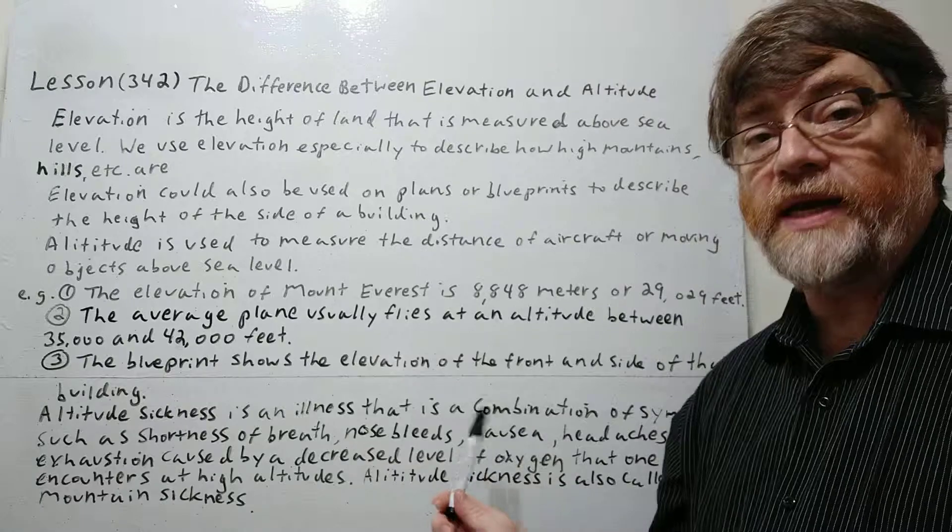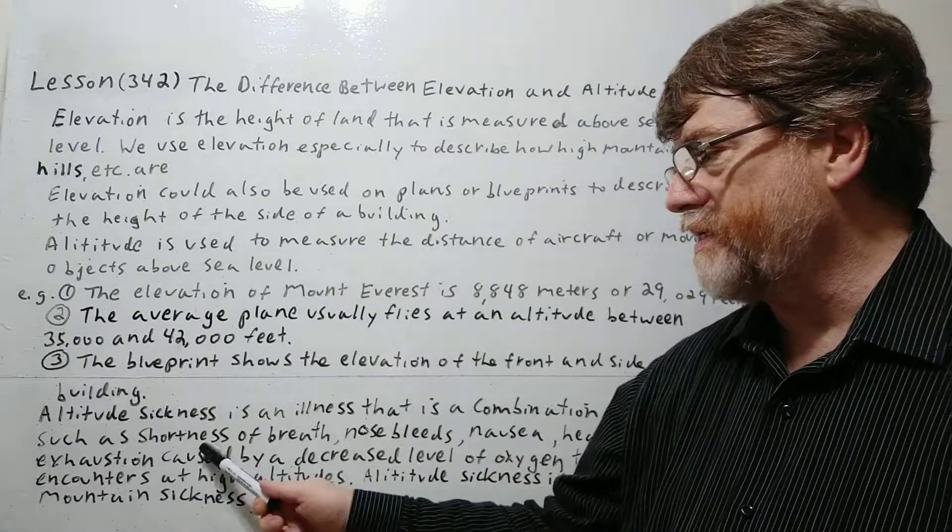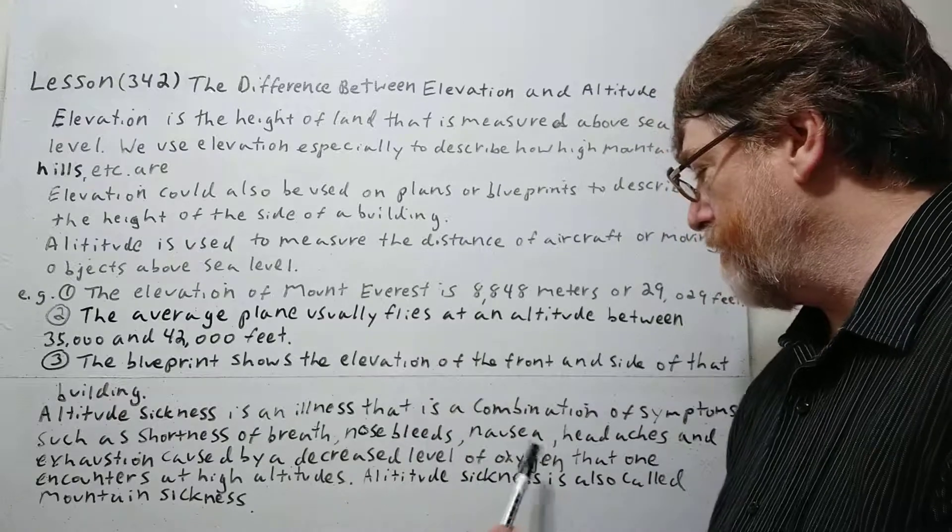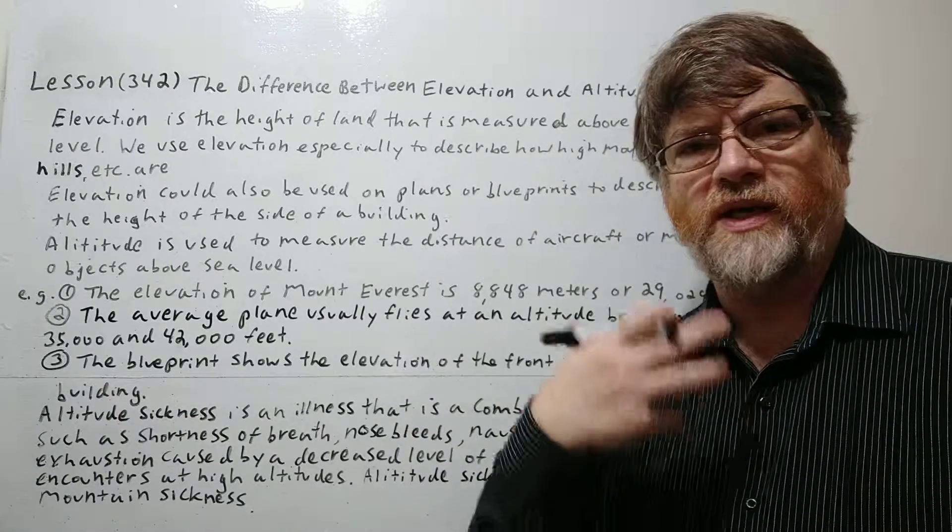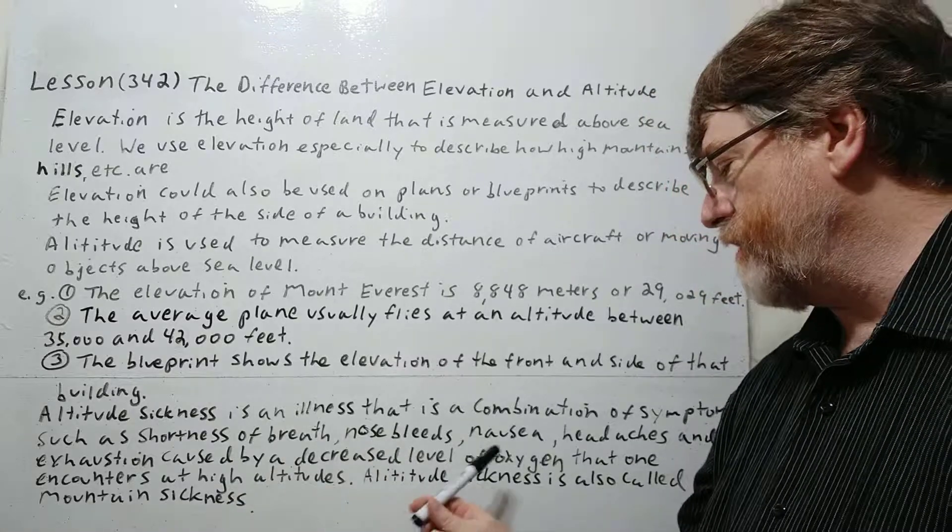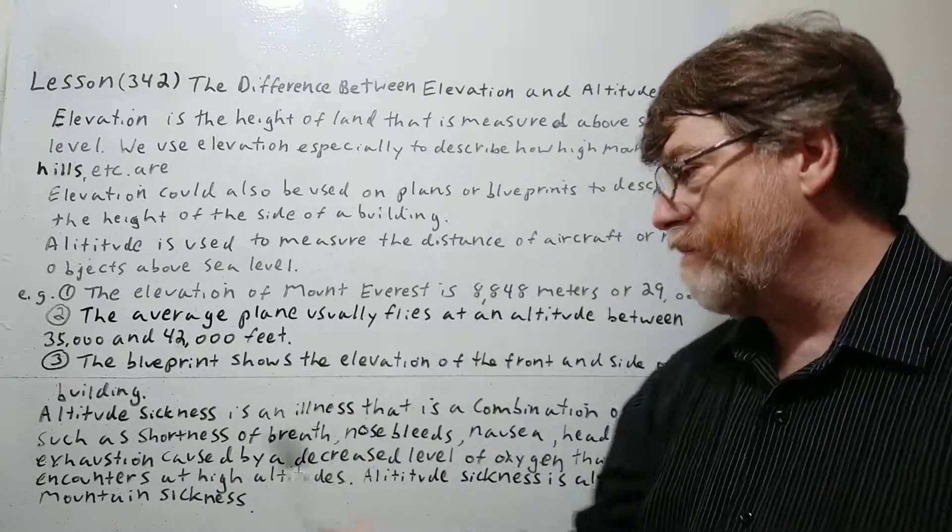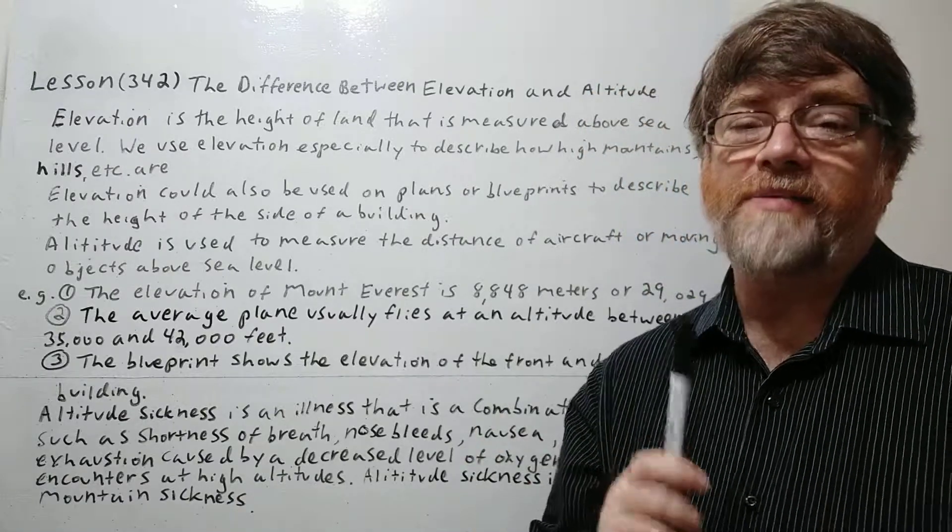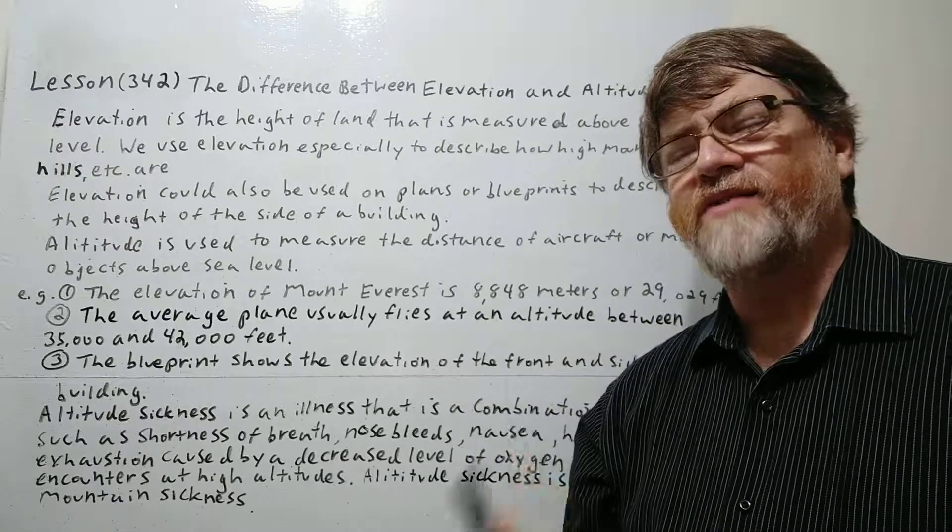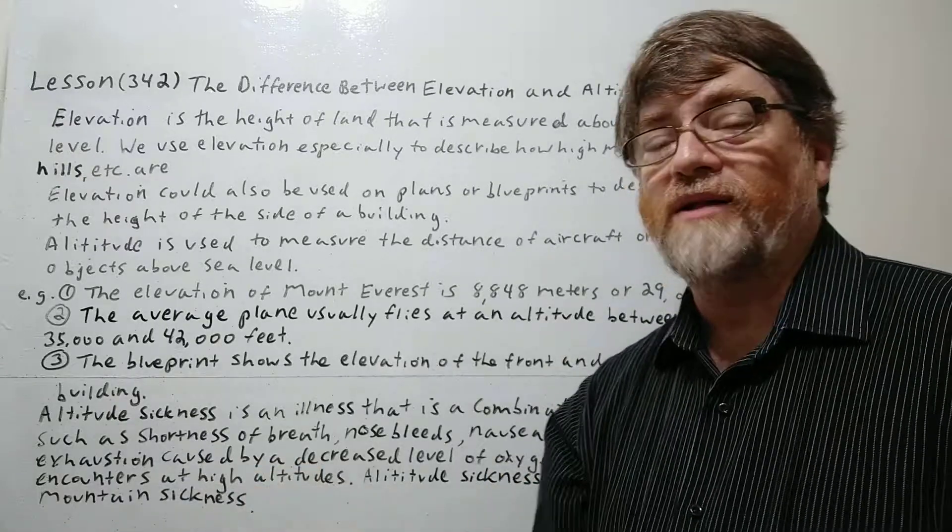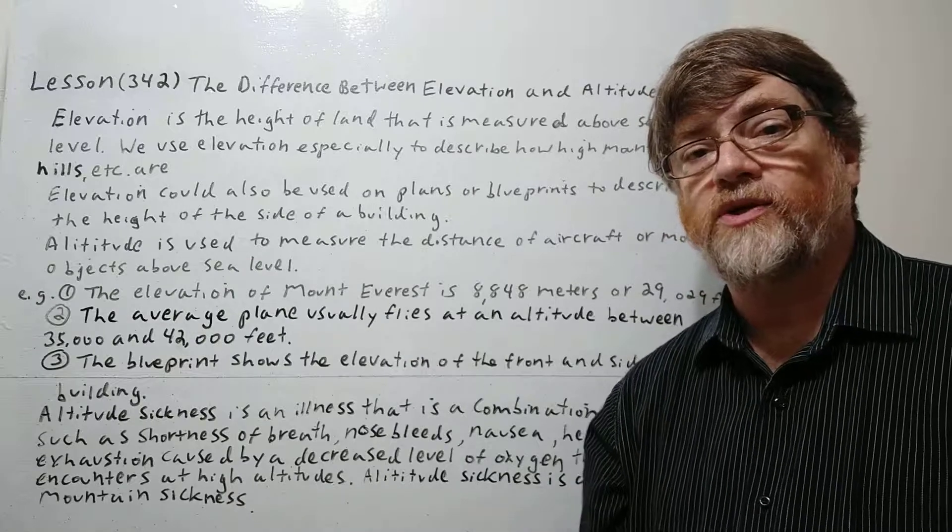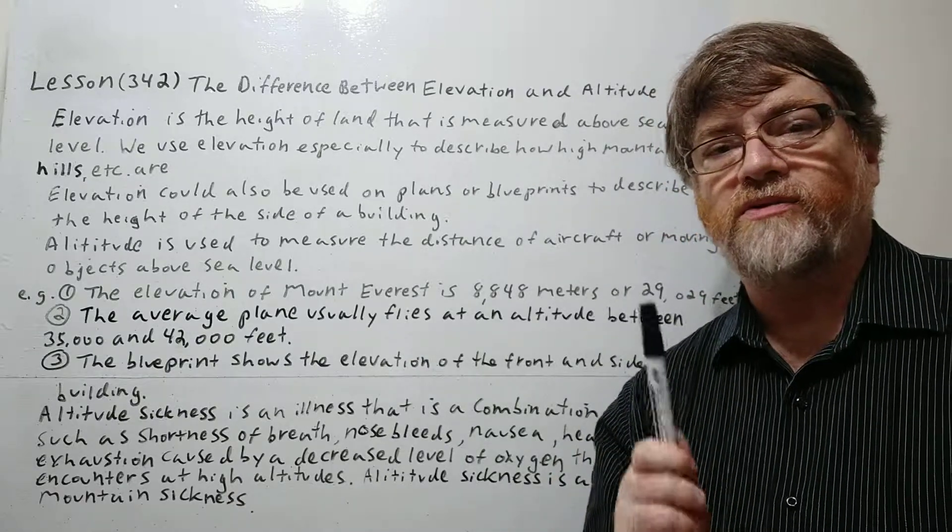Altitude sickness is an illness that is a combination of symptoms such as shortness of breath. You might be gasping or having a difficult time breathing. Nose bleeds. Your nose just might start bleeding out of nowhere. Nausea of course means you feel like vomiting or throwing up. Headaches and exhaustion caused by a decreased level of oxygen that one encounters at high altitude. So although technically I guess you could argue we are moving objects and we are at that high level, even though we are still on the mountain, we do use the term altitude sickness for this. And it's also good to note altitude sickness does have a more formal name of mountain sickness too. Even though I think I hear most people use altitude sickness. That's the more common one.